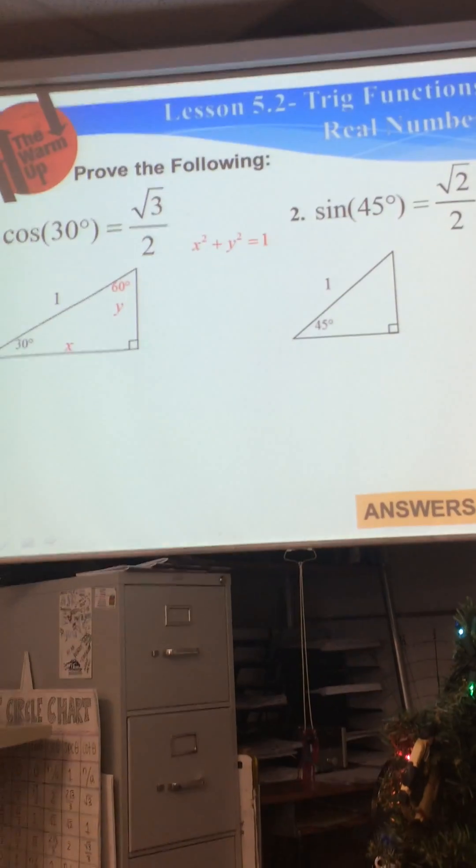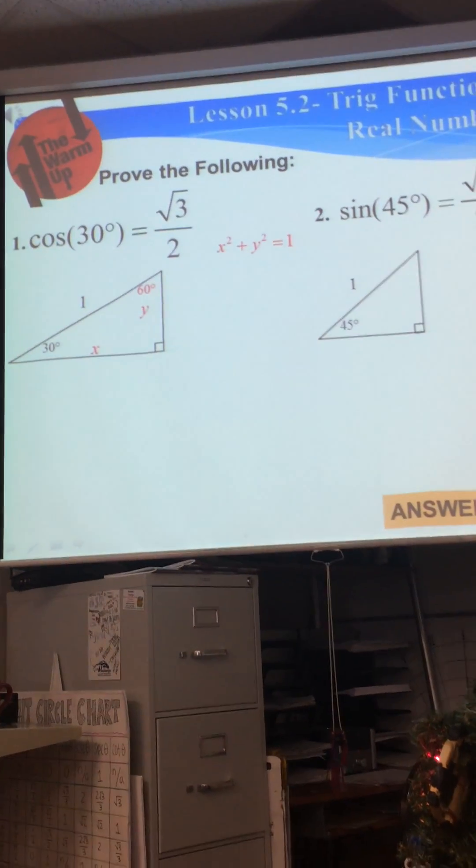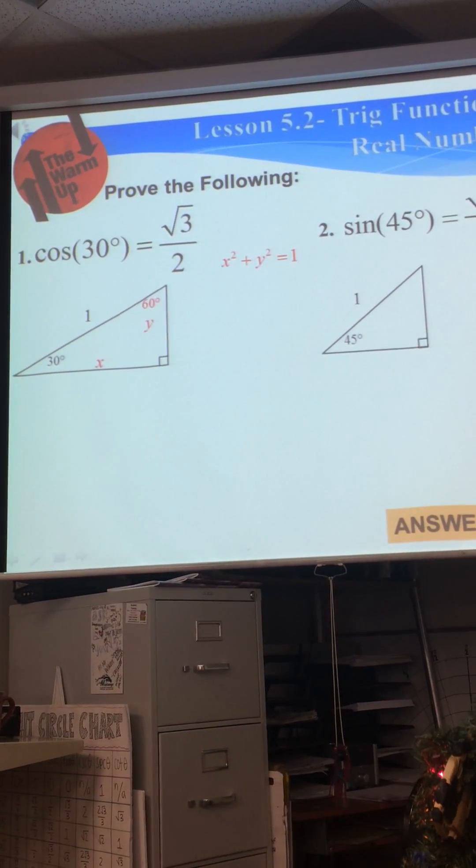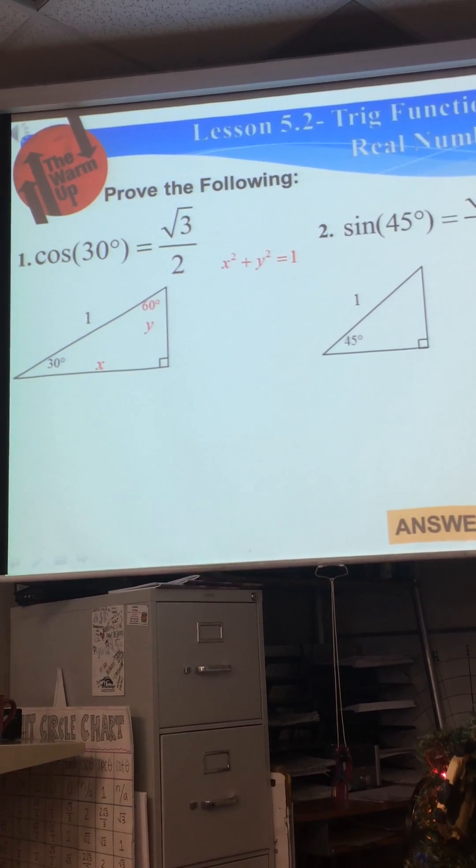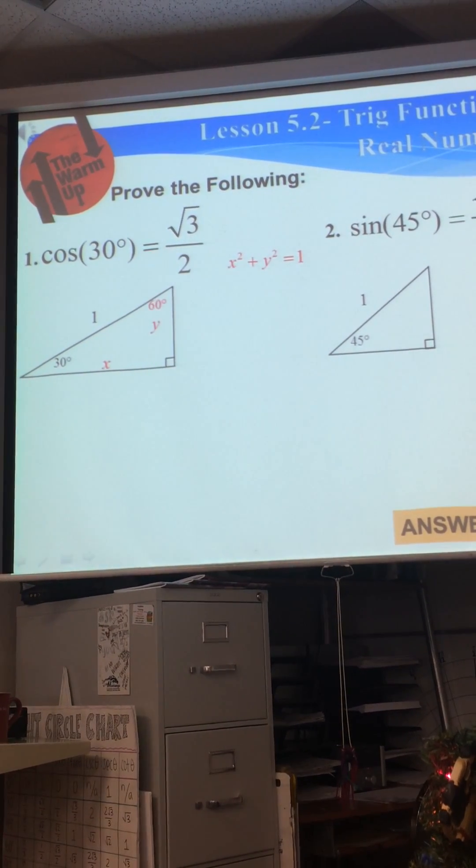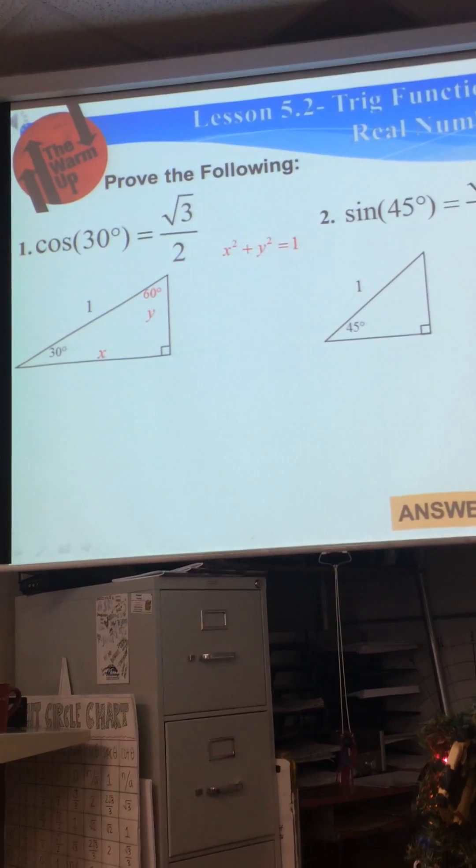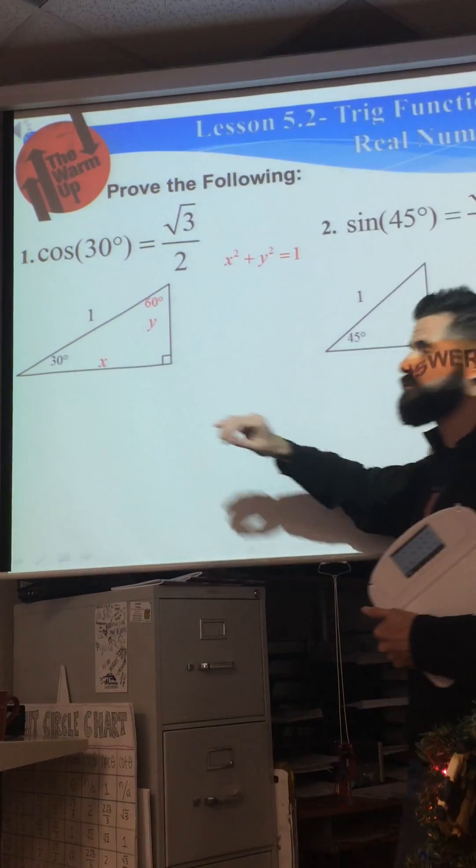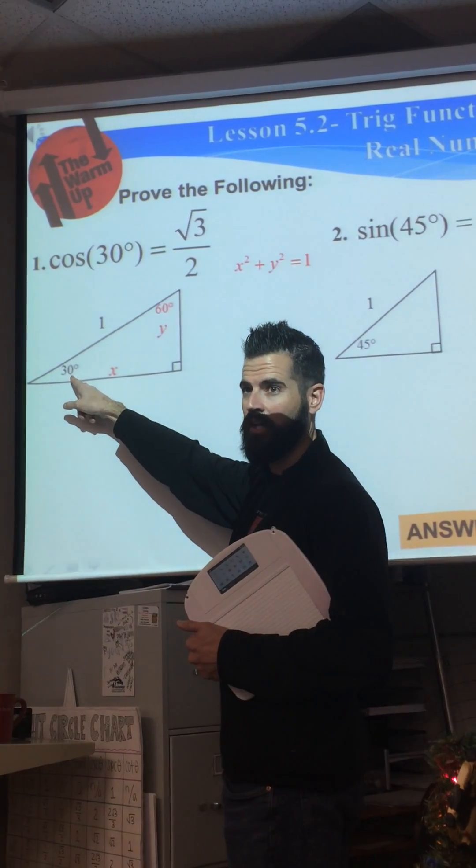Now from here, since we've got a 30-60, remember the thing I wanted you to memorize about this particular triangle. What do you have to memorize? Equilateral. Okay, so equilateral triangles have 60 degree angles. We have one of the 60 degree angles right here.